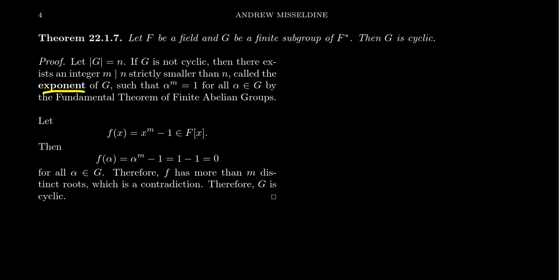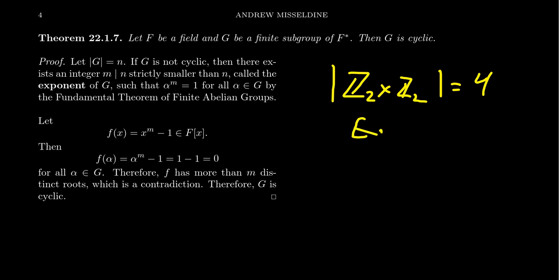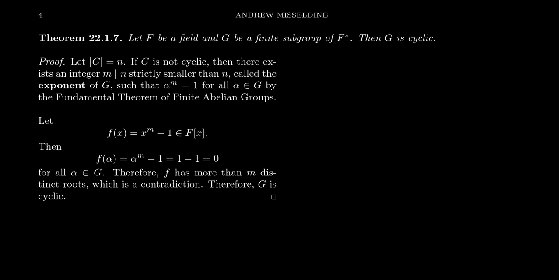By Lagrange's theorem, if you take any element alpha of your group and raise it to the order n, you get back 1. For a finite abelian group, the exponent is the smallest positive integer m such that raising any element to m gives back 1. For example, the Klein 4-group Z_2 × Z_2 has order 4 but exponent 2 — squaring any element gives the identity. If a finite abelian group is not cyclic, its exponent m is strictly less than its order n.